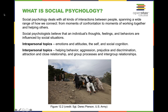Social psychology can be broken down into two topics: intrapersonal and interpersonal. Intrapersonal topics regard yourself — your emotions, attitudes, and social cognition. Interpersonal topics involve interactions between people, including helping behavior, aggression, prejudice, discrimination, attraction and close relationships, and group processes and intergroup relationships.